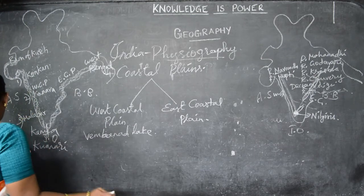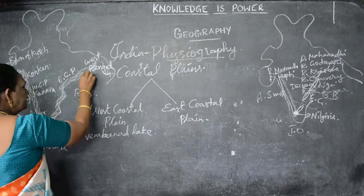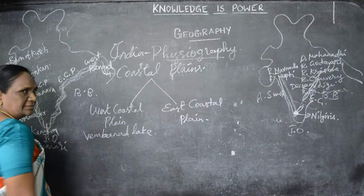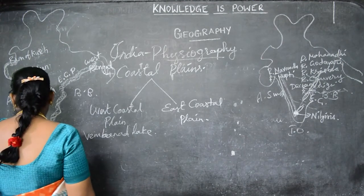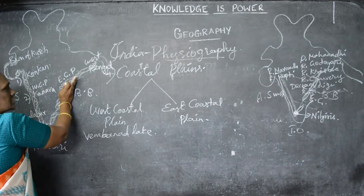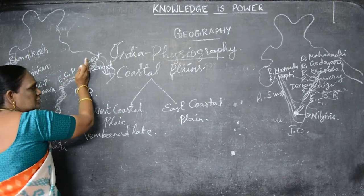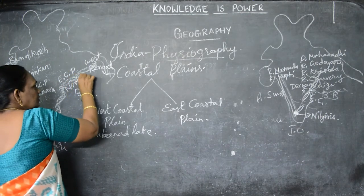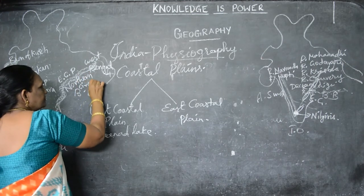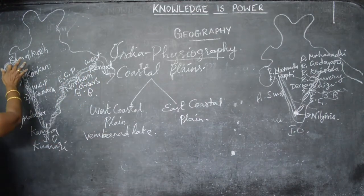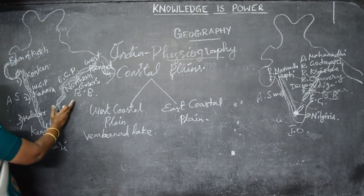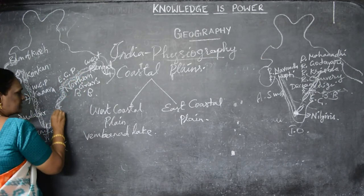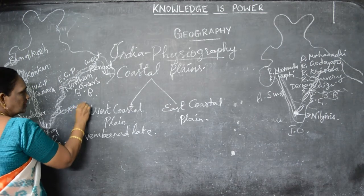In the East Coastal Plain, there are many alluvial soils. The area in West Bengal and Odisha is called Northern Sarkars. Further south, along Tamil Nadu, it is called the Coromandel Coast.